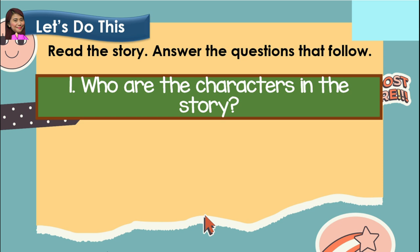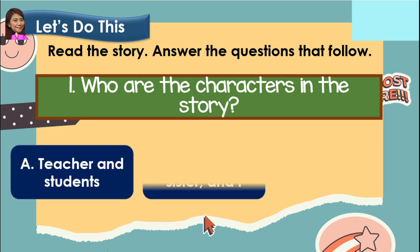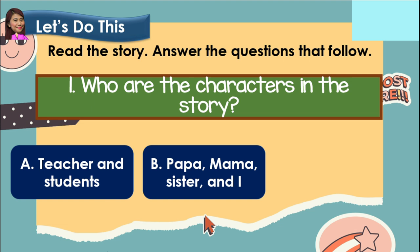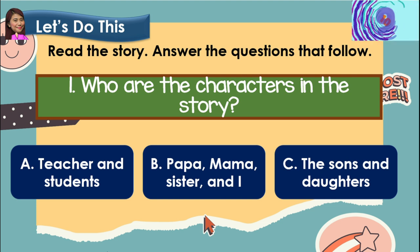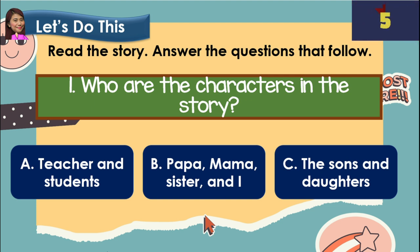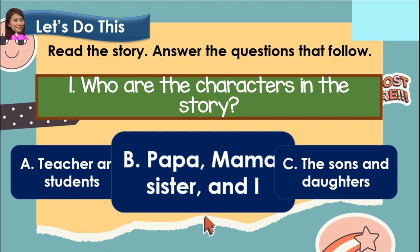Now, let's try to answer the following questions. Number one: who are the characters in the story? A. Teacher and students? B. Papa, Mama, Sister, and I? Or C. The sons and daughters? And the correct answer is letter B. Papa, Mama, Sister, and I are the characters in the story.